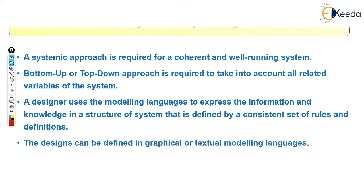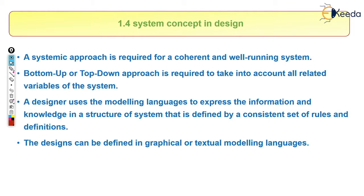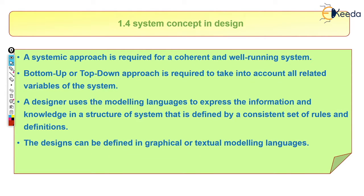A system approach is required for a coherent and well-running system. A bottom-up or top-down approach is required to take into account all related variables of the system. The main aim of this system concept is to make the system work smoothly — going from the primitive need to the final product, or from the product back to the primitive need, taking all variables into account.